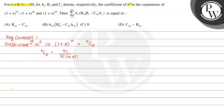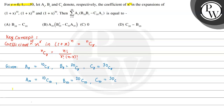Using this concept: ar is equal to 10Cr, br is equal to 20Cr, and cr is equal to 30Cr. So if we find A10, it equals 10C10. Similarly, B10 equals 20C10, and C10 equals 30C10.